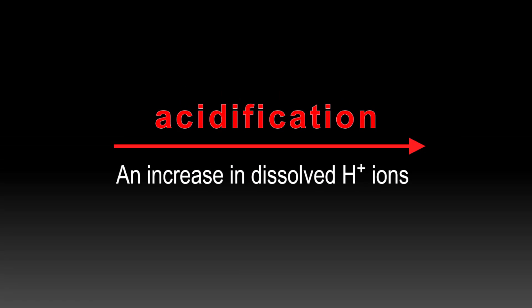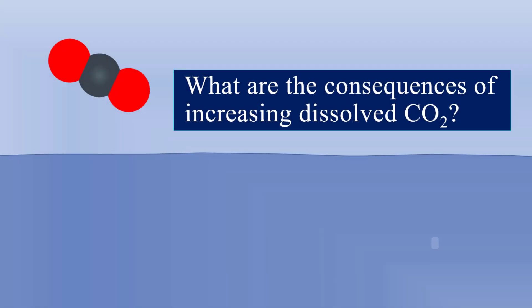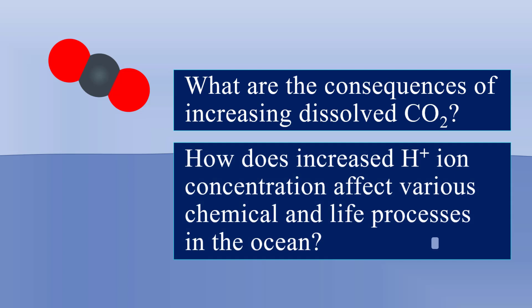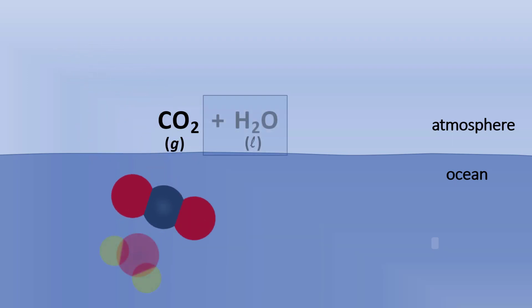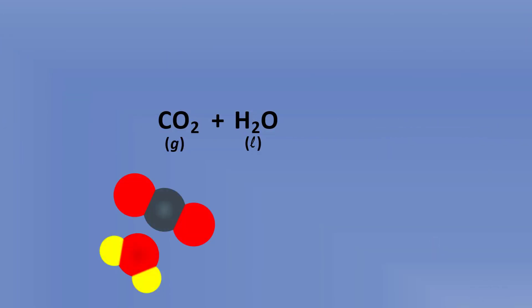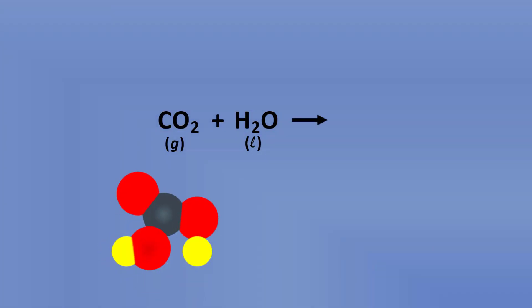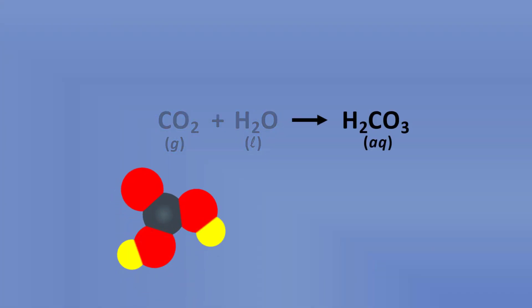So what are the consequences of increasing dissolved carbon dioxide? How does increased hydrogen ion concentration affect various chemical and life processes in the ocean? Carbon dioxide in the atmosphere will dissolve in ocean water, and the result is a reaction between carbon dioxide and water resulting in carbonic acid, which is aqueous H₂CO₃.